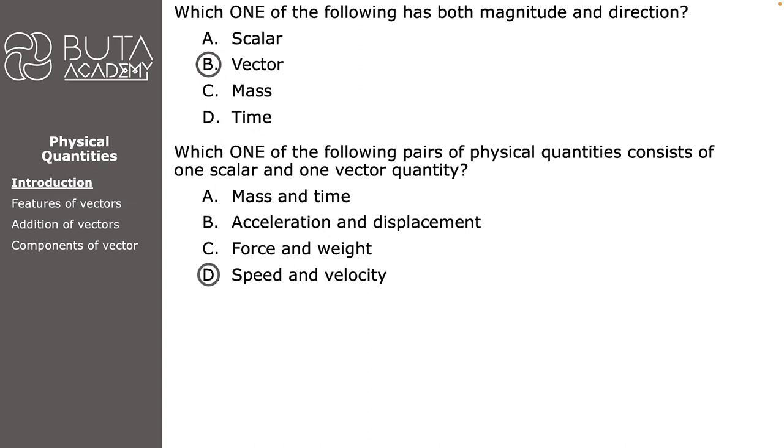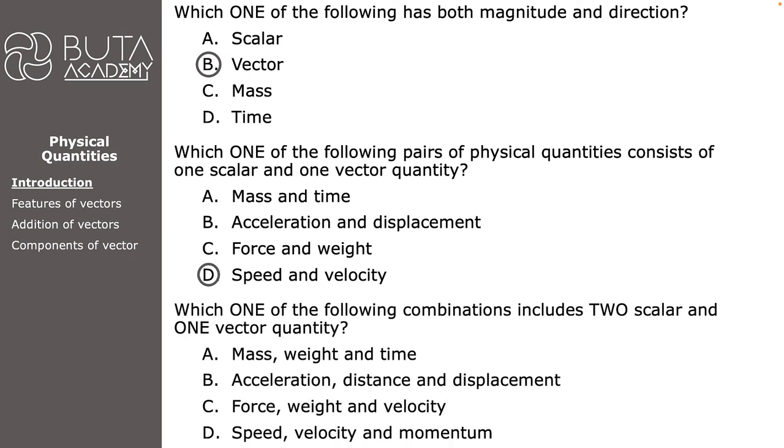Third and the last question: which one of the following combinations includes two scalar and one vector quantity? A. Mass, weight and time, B. Acceleration, distance and displacement, C. Force, weight and velocity, D. Speed, velocity and momentum. In option B, acceleration and displacement are vectors and distance is a scalar, so we have two vector and one scalar quantity. In option C, all three—force, weight and velocity—are vectors. Option D has speed as a scalar and velocity and momentum as vector quantities, so again we have two vector and one scalar quantity. The only option which has two scalars, mass and time, and one vector, which is weight, is option A.